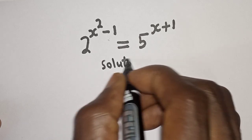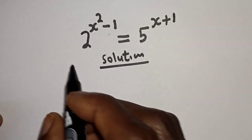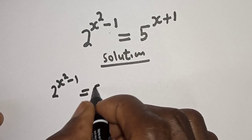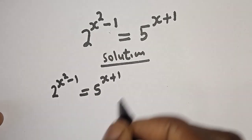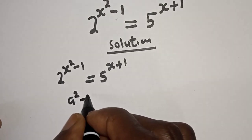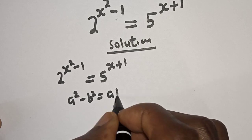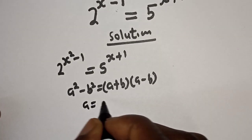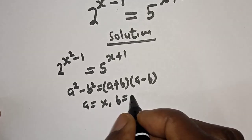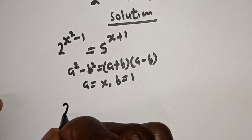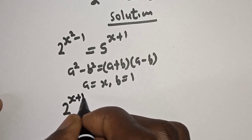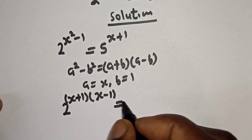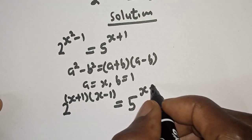Solution. We have the given equation: 2 raised to power s squared minus 1 is equal to 5 raised to power s plus 1. Take note of this exponential rule — if you have a squared minus b squared, this is equal to (a plus b)(a minus b). Here, a is equal to s and b is equal to 1. So this becomes 2 raised to power (s plus 1)(s minus 1) is equal to 5 raised to power s plus 1.